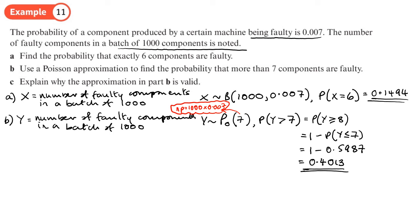Part C: Explain why the approximation is valid in part B. Because—and I was always told at school don't start a sentence with because, but I'm going to—because n is large (greater than 50) and p is small (0.007). If we wanted to, we could look at the exact value and compare the two.